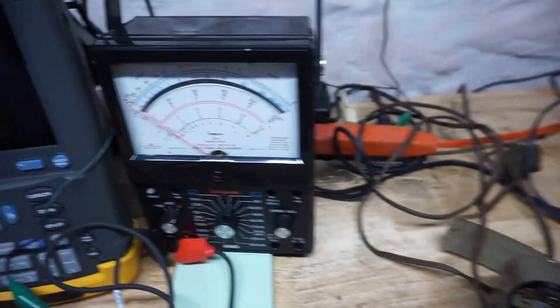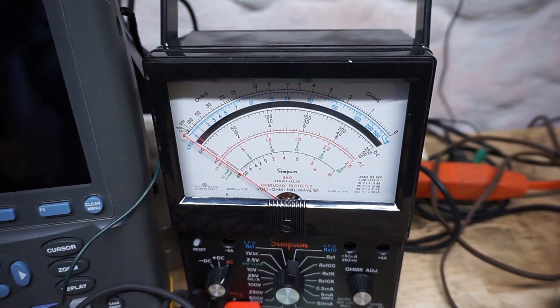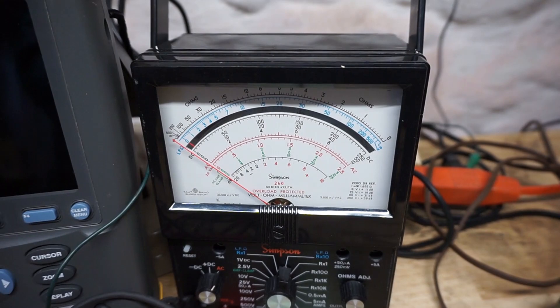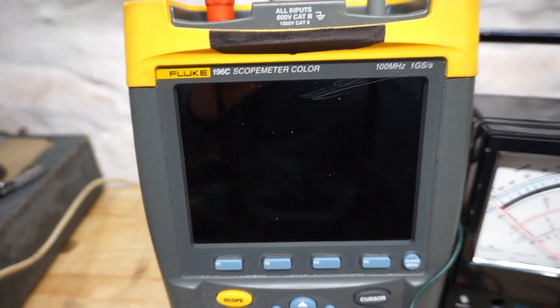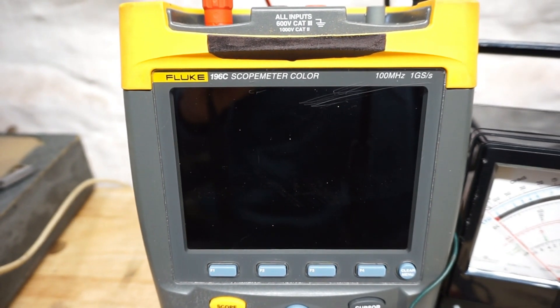So I'm going to use this instrument right here. This is an ohmmeter, a Simpson 260 ohmmeter, and I'm going to use this Fluke 196C which is an oscilloscope, it's a scope meter.